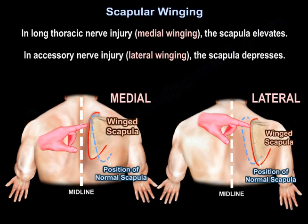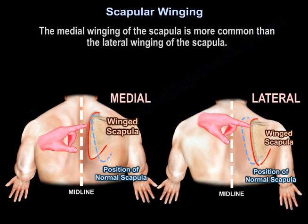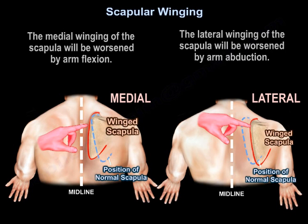In long thoracic nerve injury, the scapula elevates. In accessory nerve injury, the scapula depresses. Medial winging is more common than lateral winging. Medial winging of the scapula is worsened by arm flexion, while lateral winging of the scapula is worsened by arm abduction.